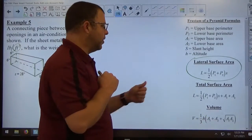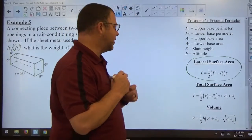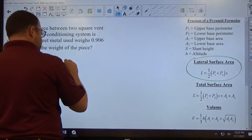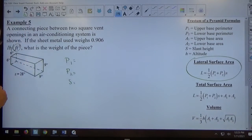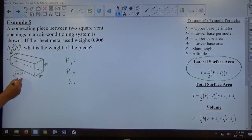They're asking me for lateral surface area. Just like the last problem, lateral surface area requires two perimeters and a slant height. So P1 equals something, P2 equals something, slant height equals something.